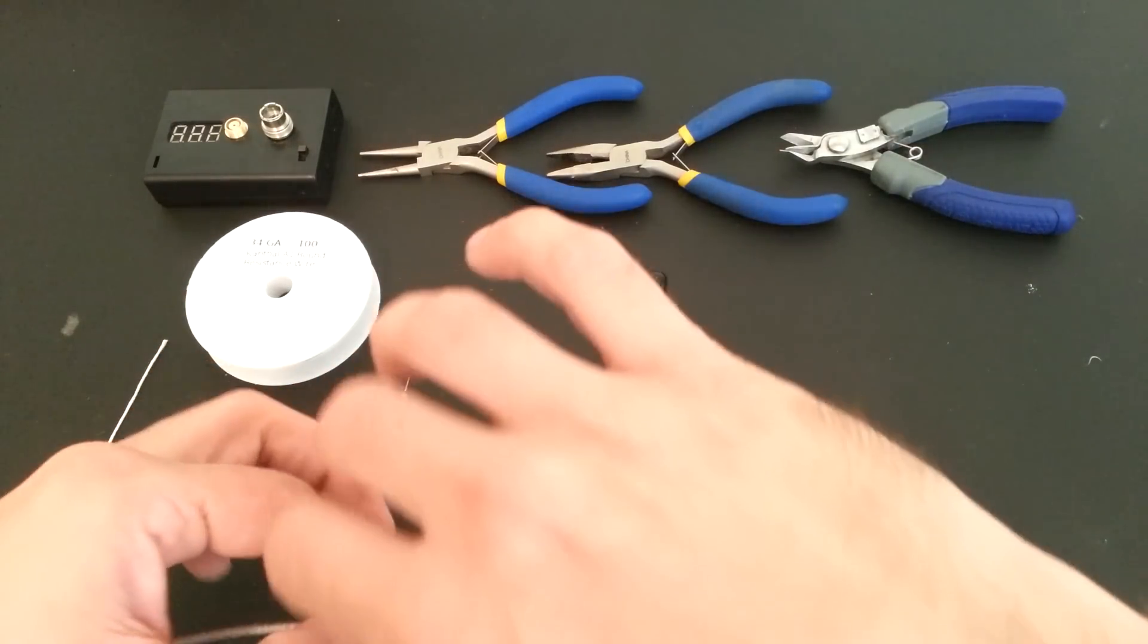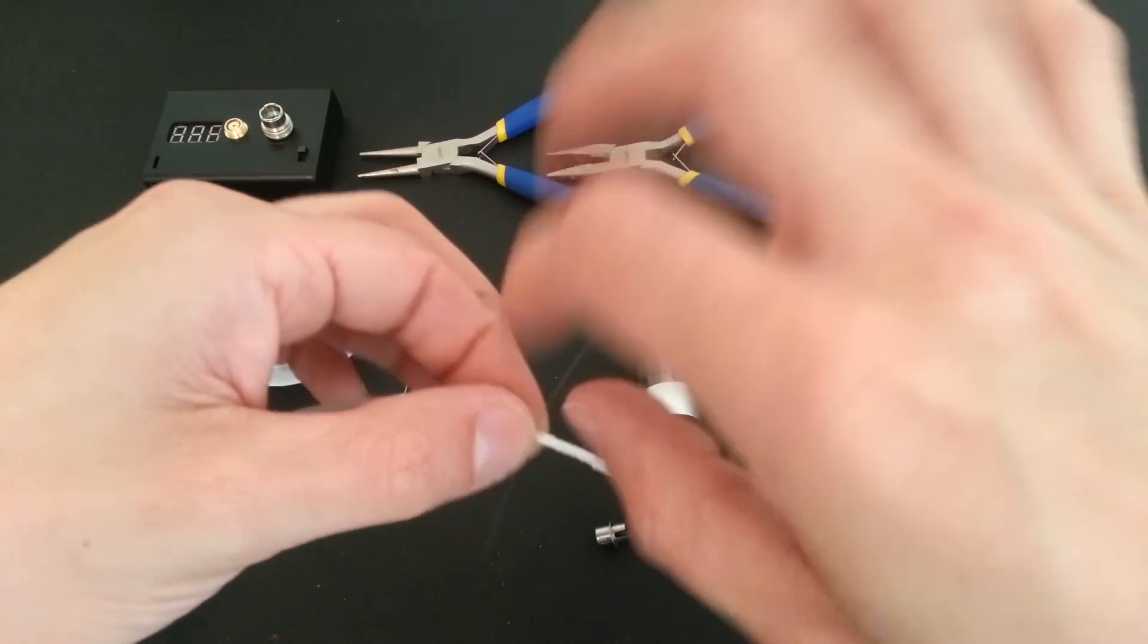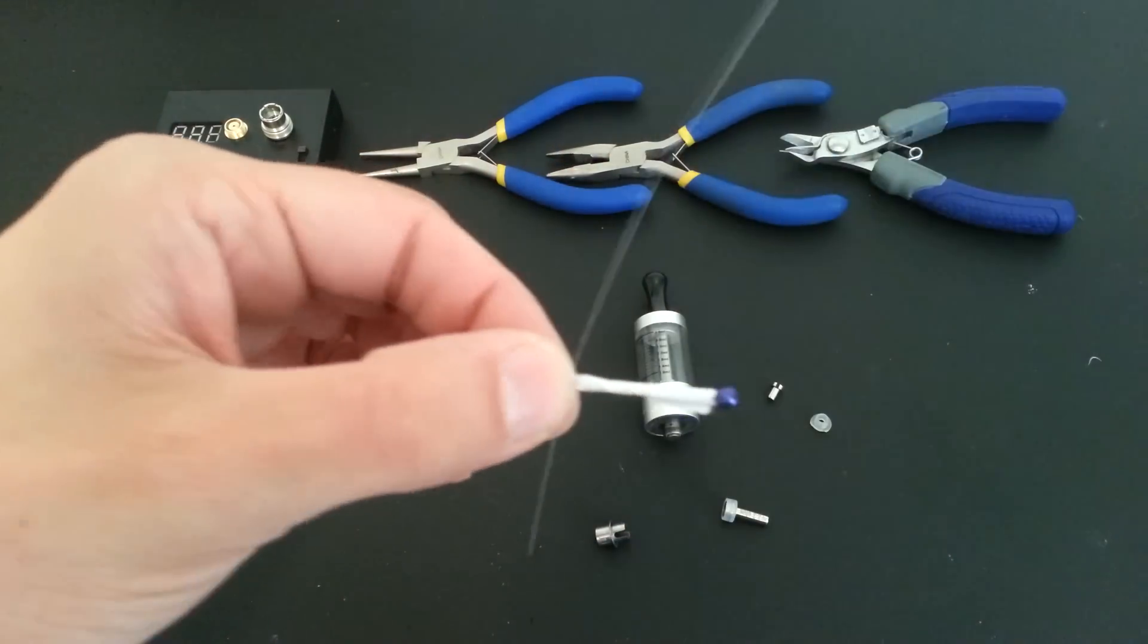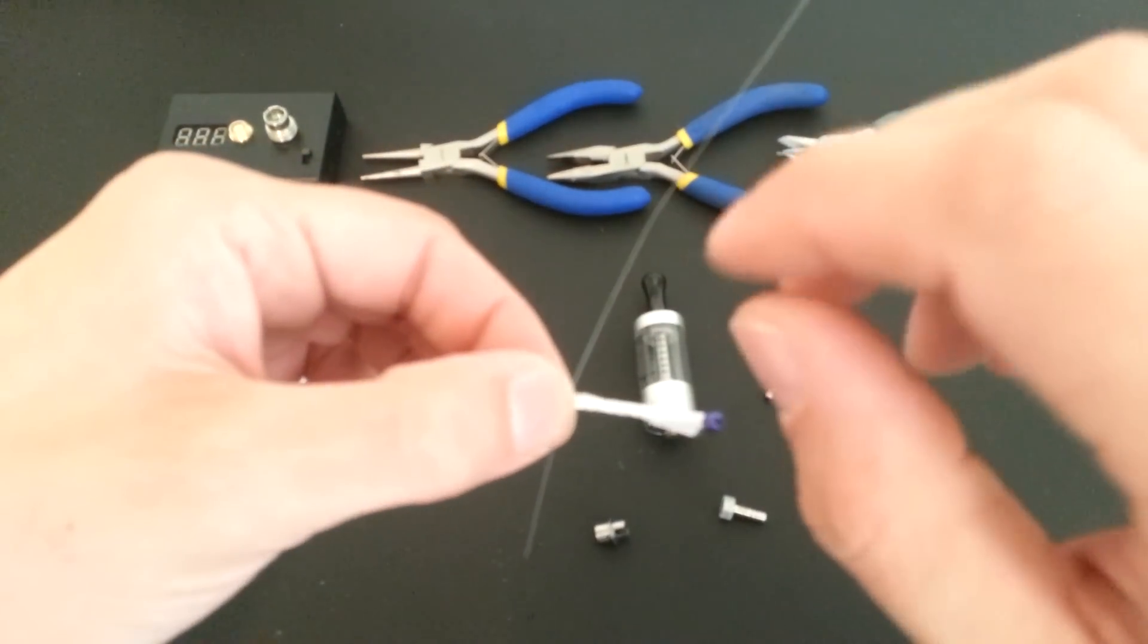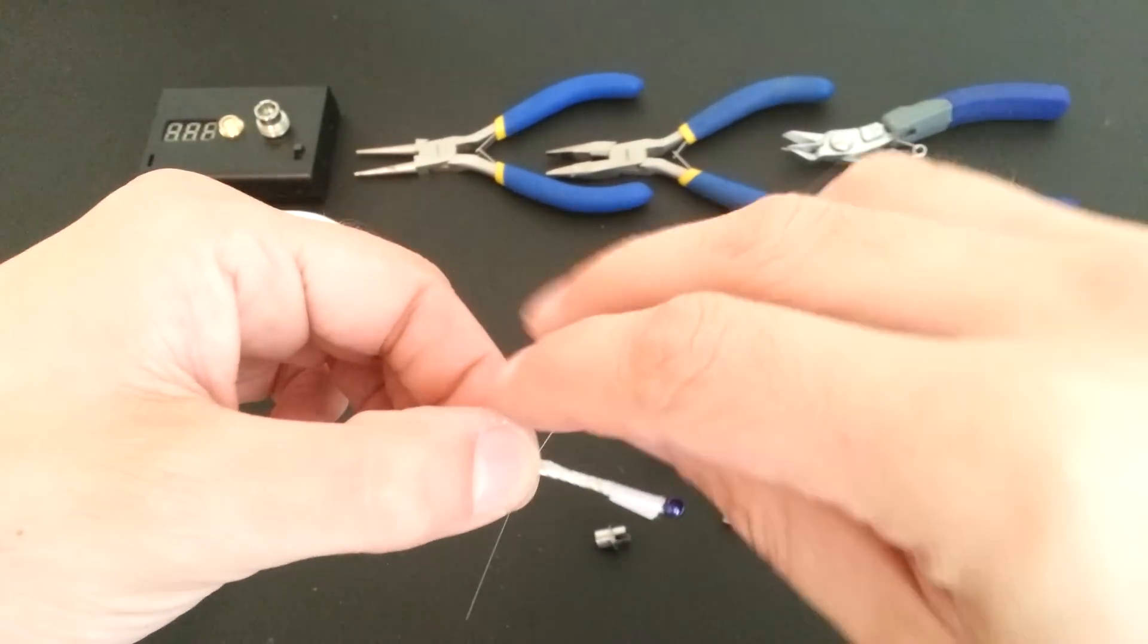So let's take our 34-gauge Kanthal and begin to wrap. Let me get this focused for you guys. There we are.